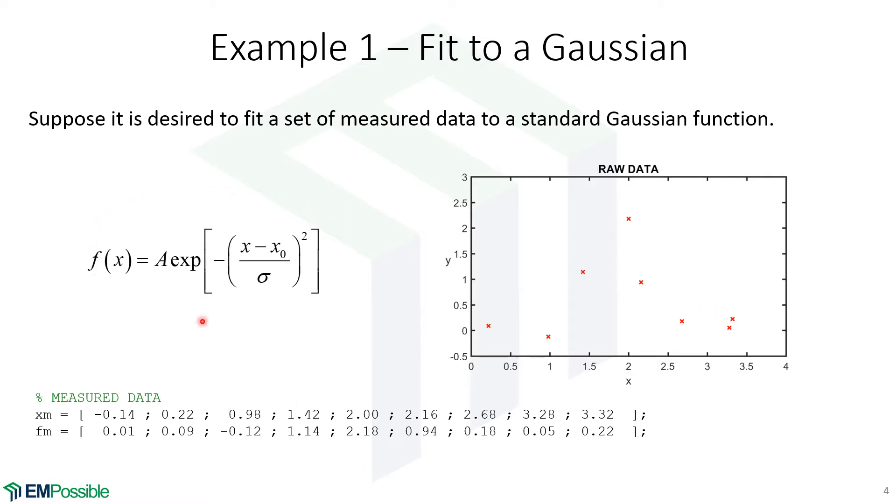But we want to fit it to this Gaussian. So we have some kind of amplitude, some kind of offset of where the center of the Gaussian is, and we have the width of the Gaussian.